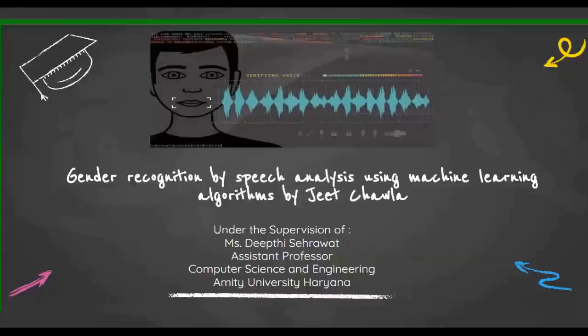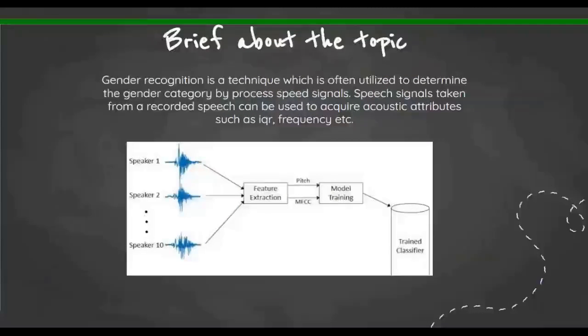Gender recognition is a technique which is often utilized to determine the gender category by process of speech signals. Speech signals taken from recorded speech can be used to acquire acoustic attributes such as interquartile range, frequency, etc. In simple language, what I have done is I have taken the data of speech and those are acoustic signals. By acoustics I mean that those signals don't just contain one specific frequency but a spectrum of frequencies recorded by someone speaking.